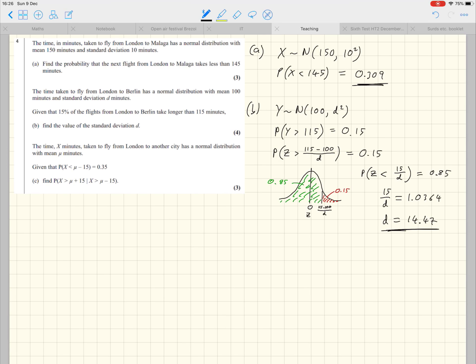Part C. Read carefully here. The time, X minutes, we're back to X. I'm going to come over here to do part C over here in the space. X has a normal distribution with mean mu. And this time, we don't know anything about standard deviation either. So all we know is that X is normally distributed. I've written that there, but to be honest, it's not particularly helpful.